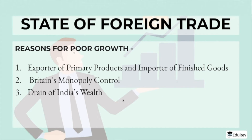The state of foreign trade is the next topic. India had been an important trading nation since ancient times. But when restrictive policies of commodity production, trade, and tariff were imposed by the colonial government, it adversely affected the structure, composition, and volume of India's foreign trade. The reasons behind the poor growth of foreign trade were: first, India was an exporter of primary products and importer of finished goods only; second, Britain's monopoly control; and third, the drain of India's wealth — all of these points led to the drain of India's wealth.